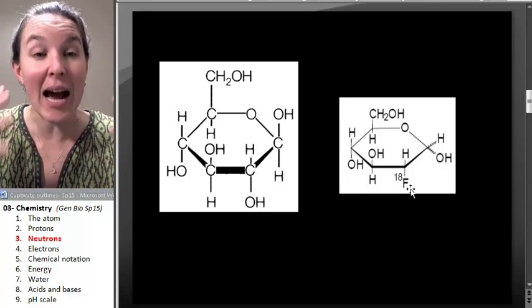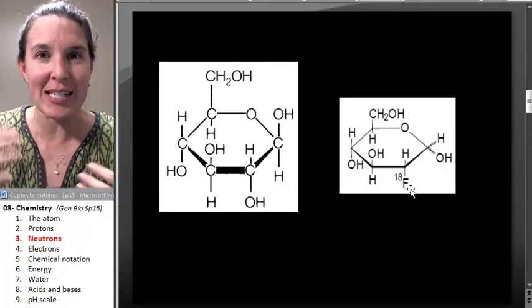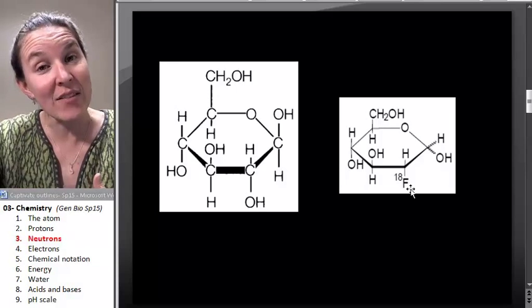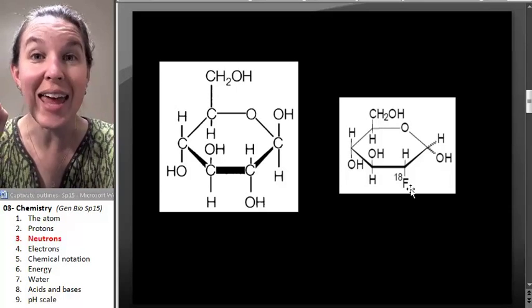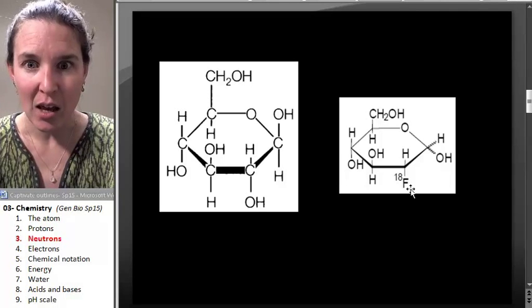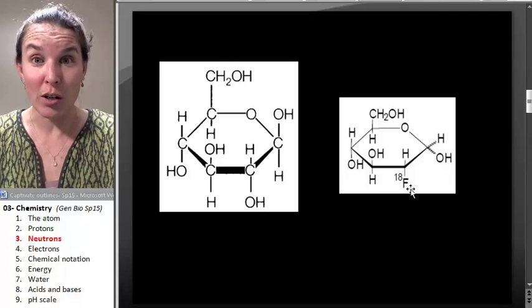And since it's an isotope, it's not the most stable one and it decays. And when it decays, it gives off light. So now think about this: you have a light-emitting particle of sugar, glucose.